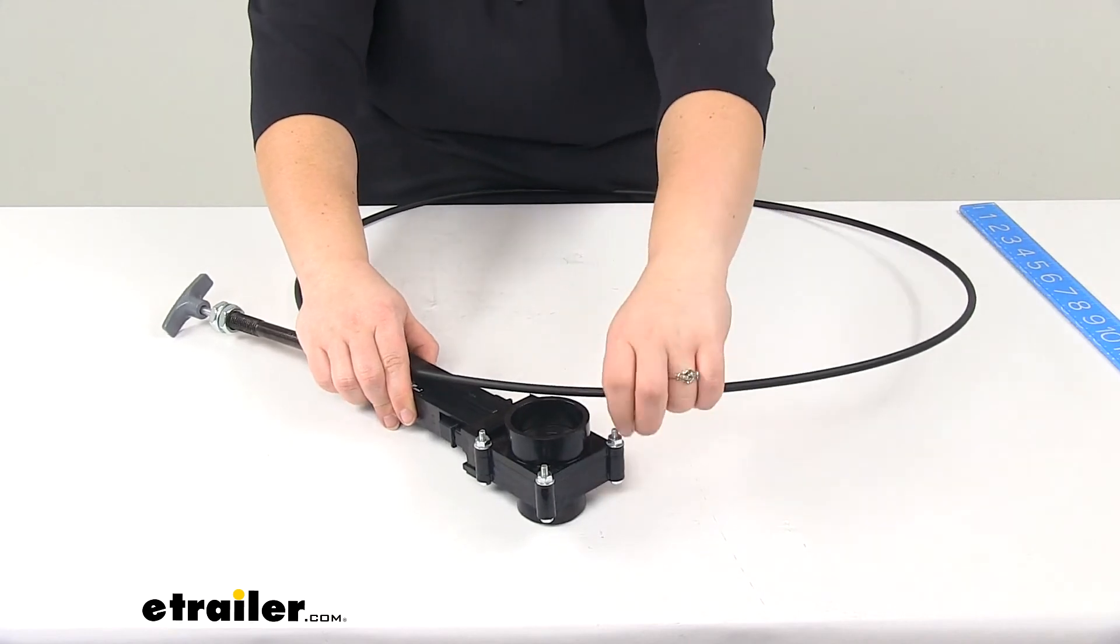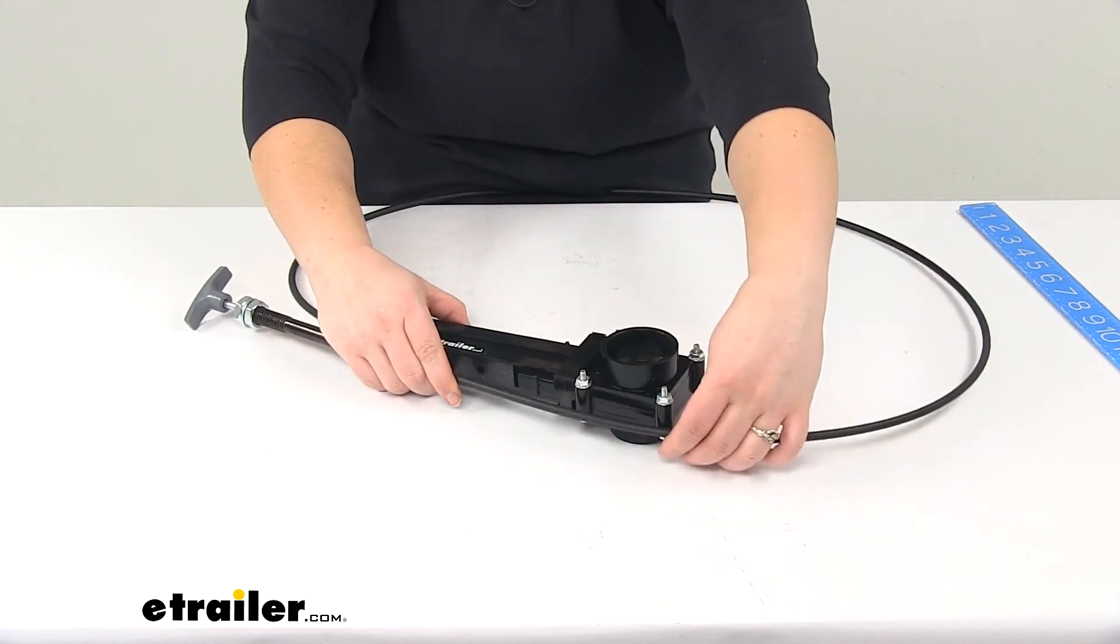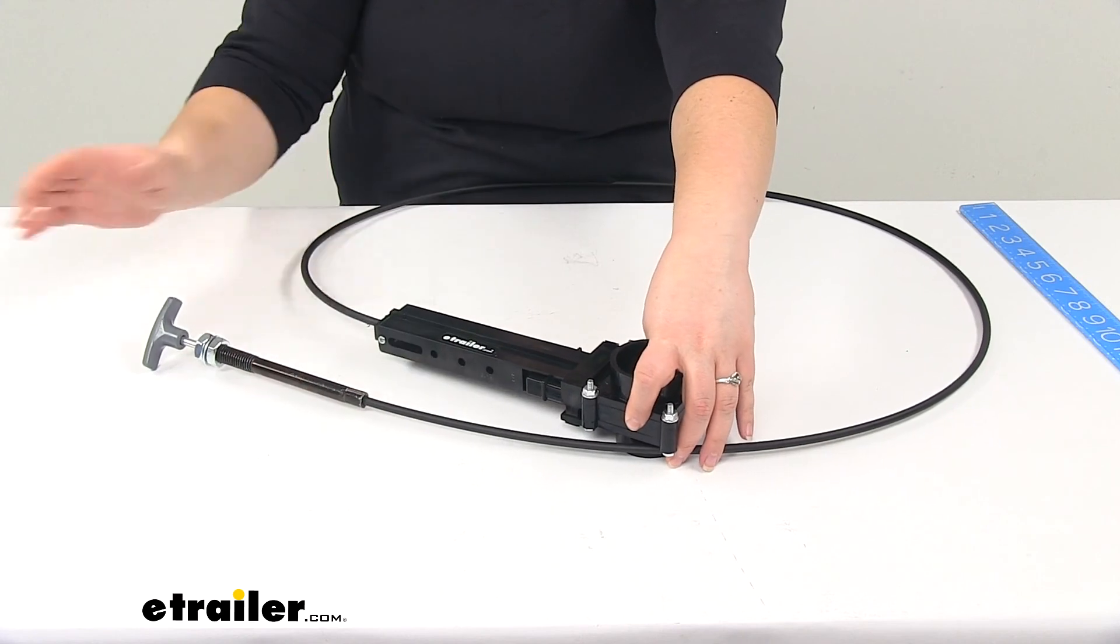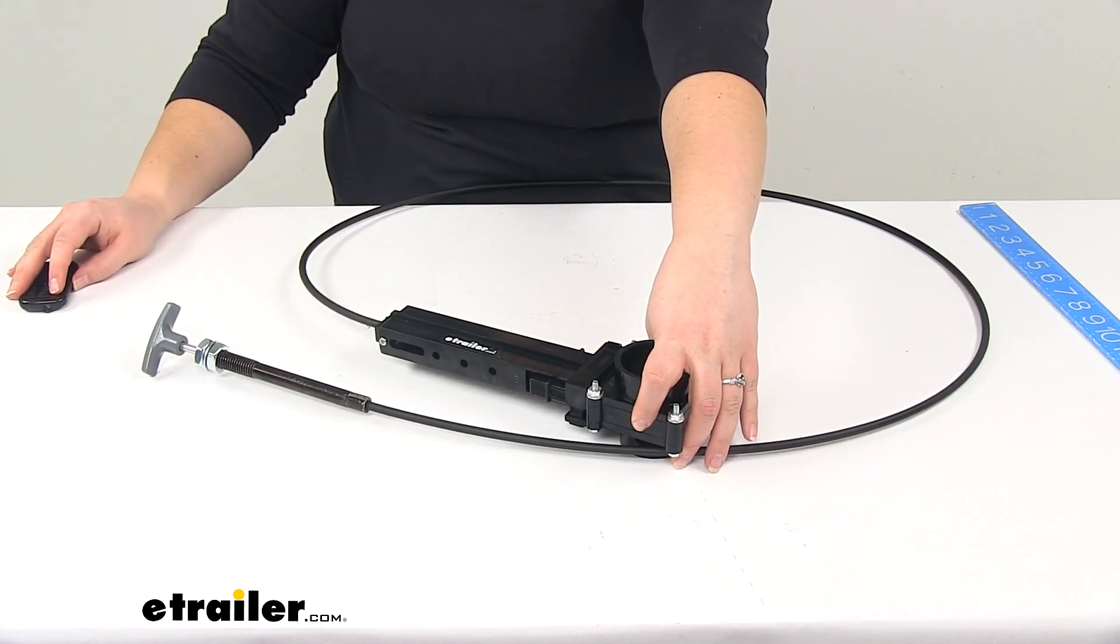And that's going to do it for our look at the LaSalle Bristol RV waste valve with a one and a half inch diameter and a 72 inch cable.